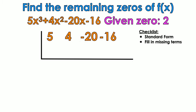We're going to use the synthetic division process, so I have standard form 5, 4, negative 20, negative 16. All the positions were filled, so I don't need to fill in any zeros, and I'm going to put the zero on the outside.